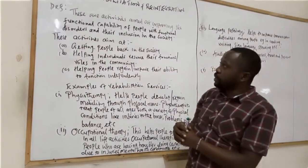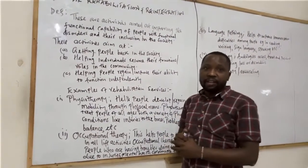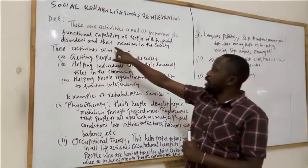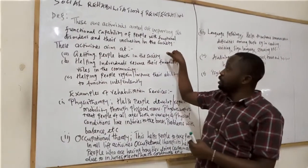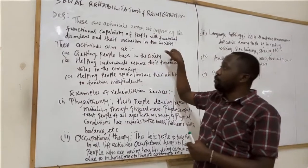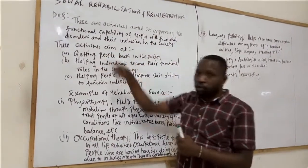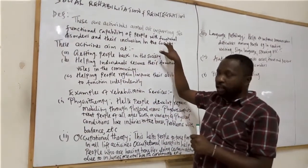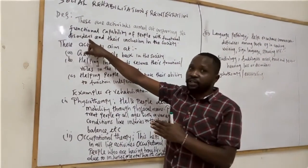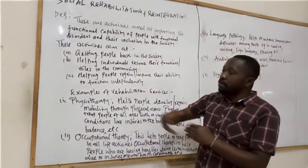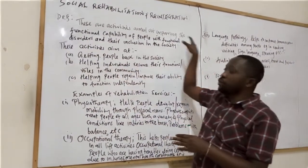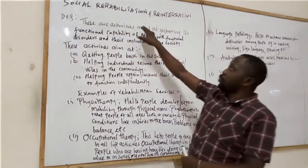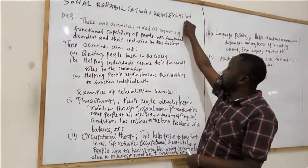Reintegration comes in especially with people who have deviant behaviors or those who may violate the law of the land. They could be offenders. These are individuals who need to go back to the community, but sometimes the community may not be willing to accept them back. As social workers, we need to facilitate their re-entry into the society. We need to counsel these individuals so that they can change their behaviors and attitudes, and talk to the community members so they can be willing to accept them back. By doing that, we have offered rehabilitation and reintegration services.